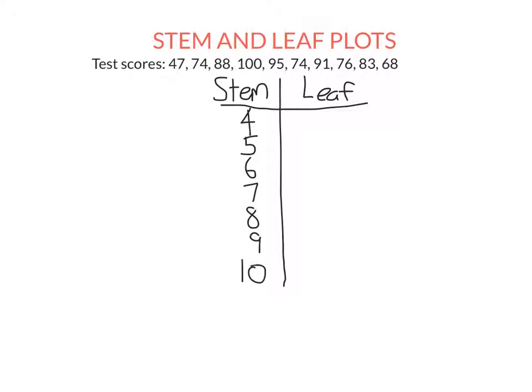We don't skip any. So we still write the five here, for example, even though there were no scores in the 50s. So how we write each score, let's start with 47. We write it like this. So this means that it has four tens and seven units. So that's our key here. Usually we give a key. Four, seven represents a score of 47, four tens, seven units.